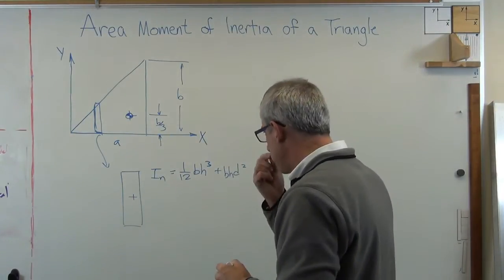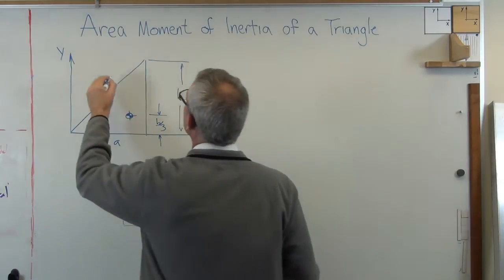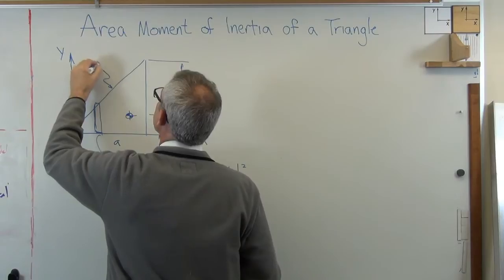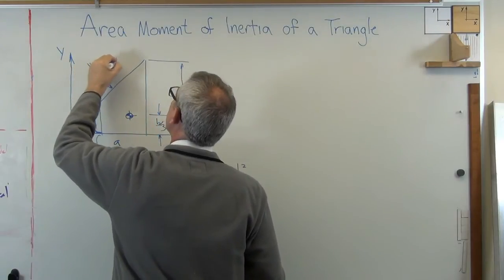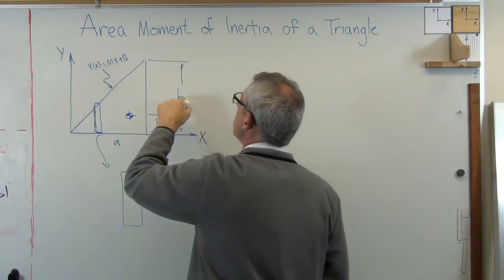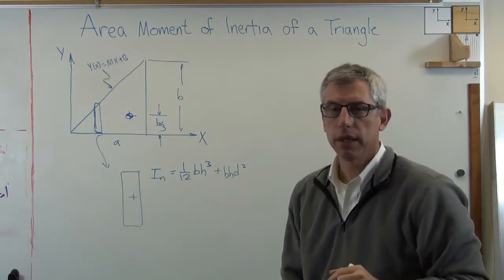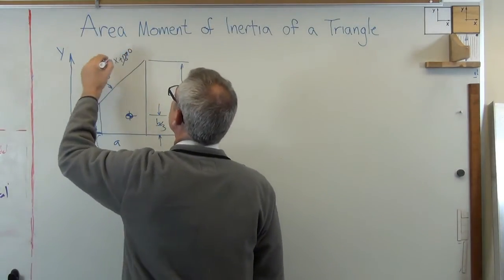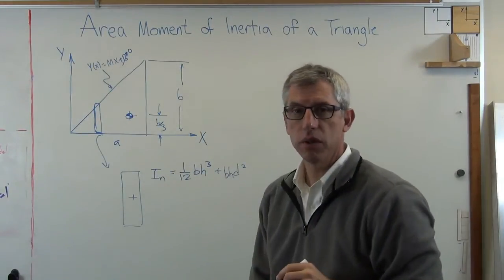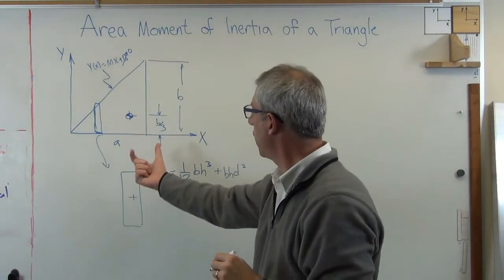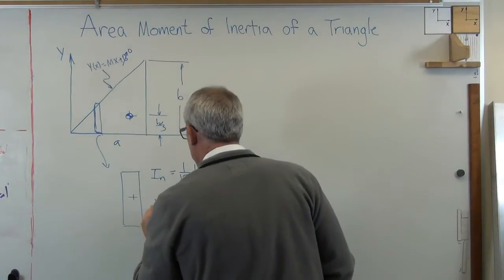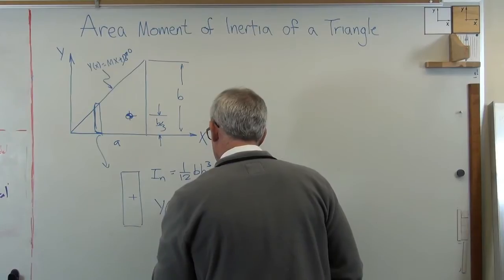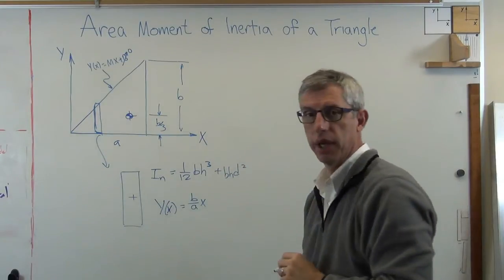Now, the next thing we need to know is what's the expression for that line right there. Y of x equals mx plus B. B is the y-intercept. So B is zero here. And m is the rise divided by the run. So I'm going to find out is y of x equals b over a times x.